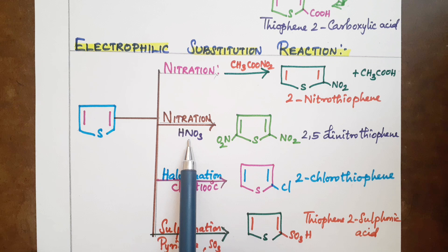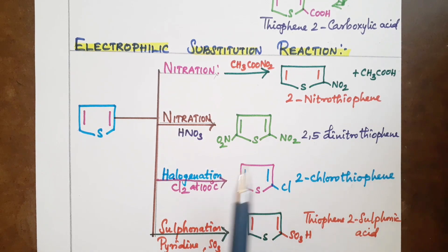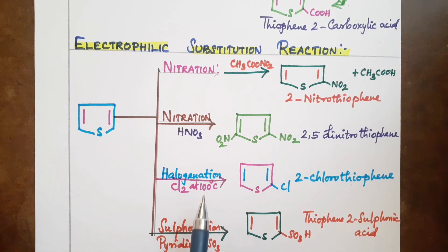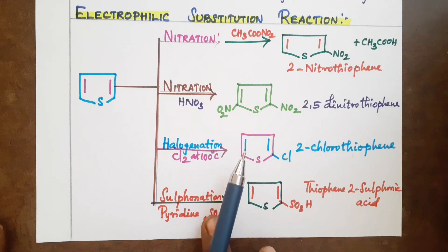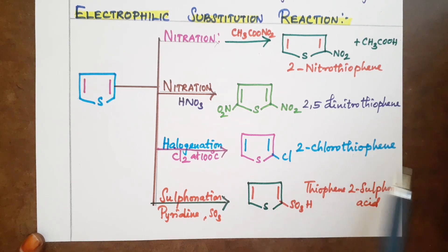With nitrating mixture, nitric acid and sulfuric acid, this is a product of nitric acid. 2,5-dinitrothiophene is the product. We have halogenation: chlorination and bromination. If you react with chlorine, you get 2-chlorothiophene.